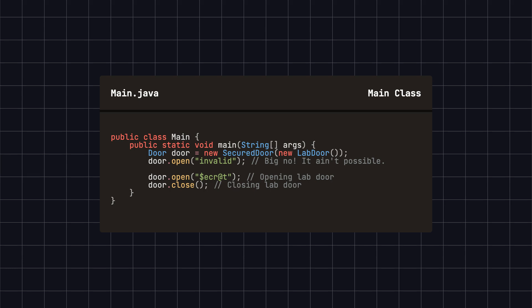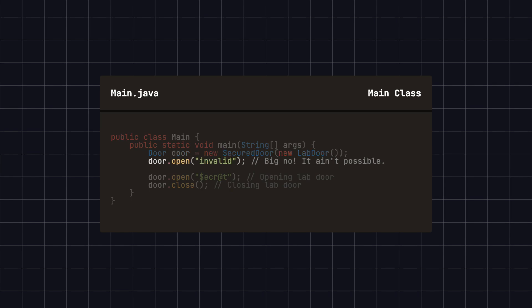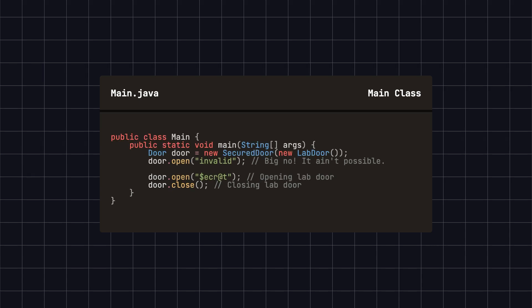Here's an example of how to use the proxy. In this example, we create a SecureDoor object and pass in a LabDoor object. We attempt to open the door with an incorrect password, and the system indicates it cannot be opened. When we use the correct password, the door opens smoothly and then closes. Through this example, we can clearly see how the proxy pattern controls access to the actual door, LabDoor. The proxy object, SecureDoor, adds a security step, providing protection for the door without needing to change the original door's implementation.